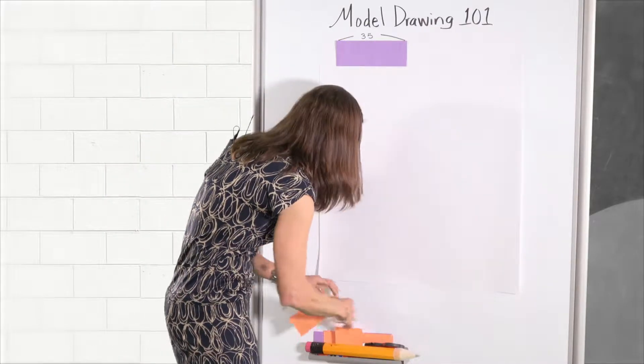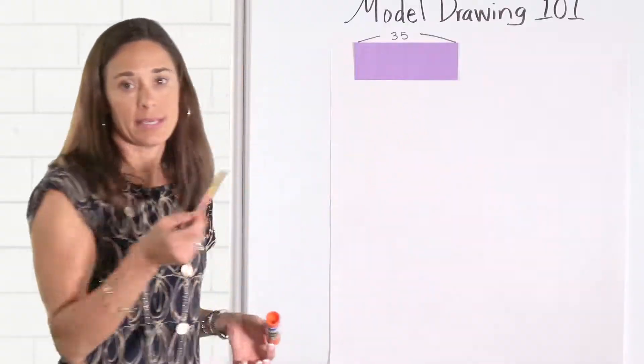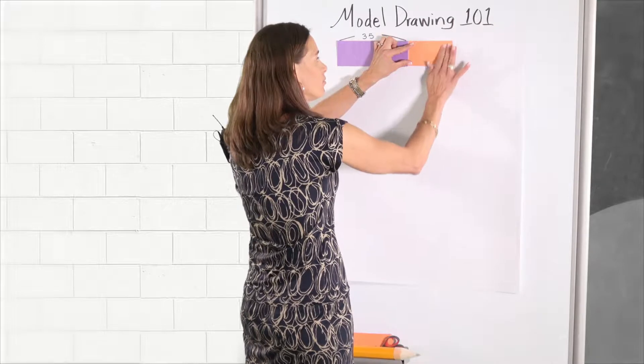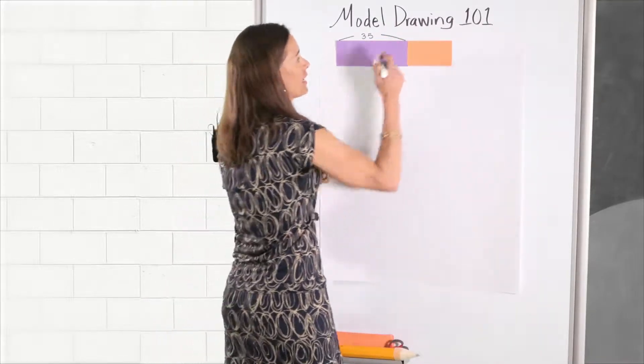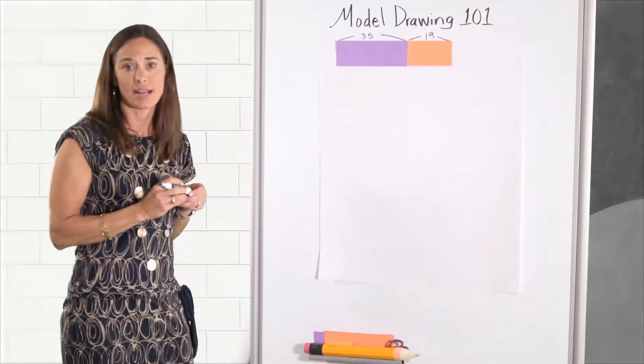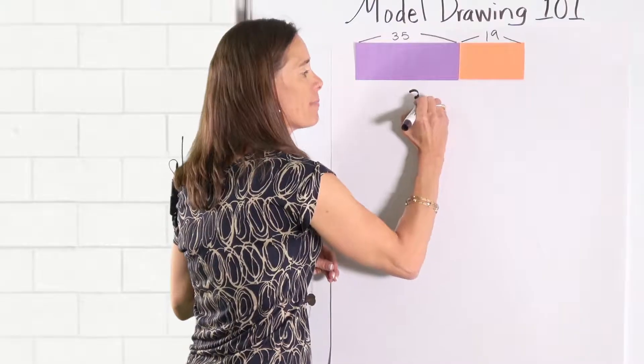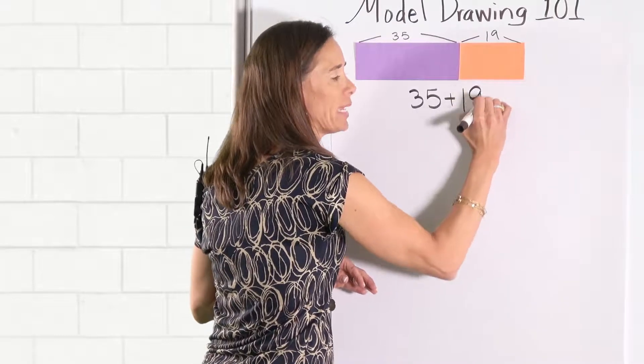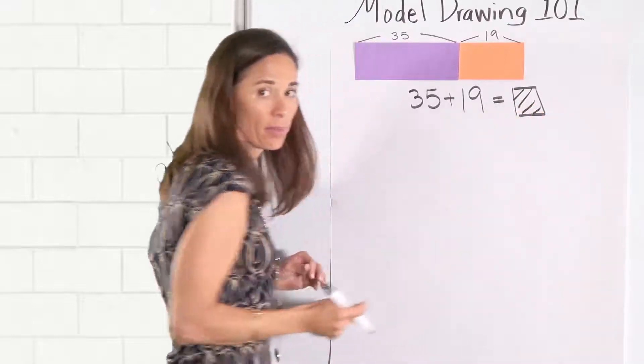And so in doing so we would say Spikey has his 35 coins and Curly's 19 coins. The action of joining. And we could represent that by showing the 19. This would be referred to as a part plus part equals my whole. So we would expect students to write a math sentence to represent the action of joining.